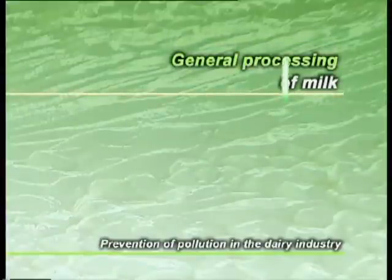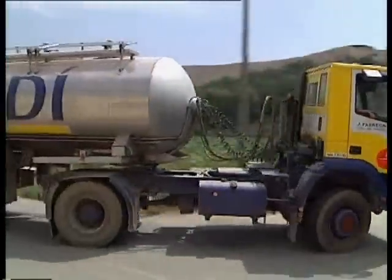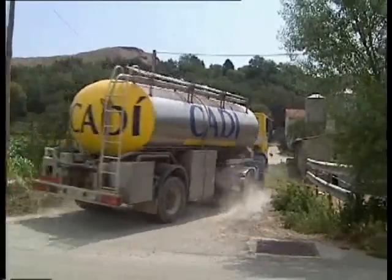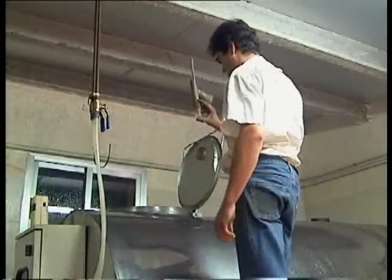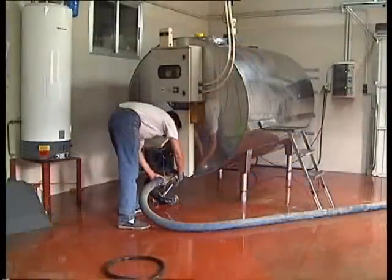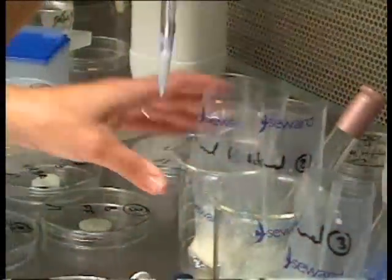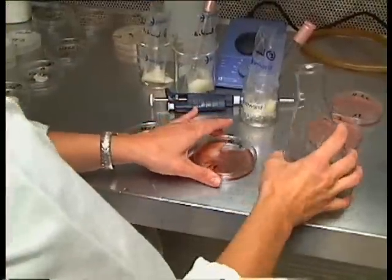General processing of milk. Control of raw materials. The implementation of a quality control system for raw materials can reduce and prevent the acceptance of inadequate raw materials that may become waste or later rejected products.